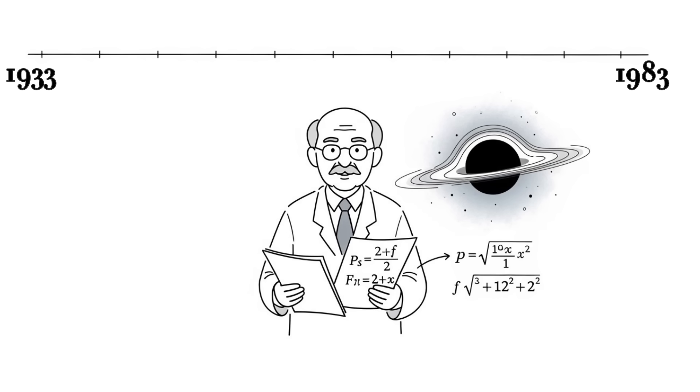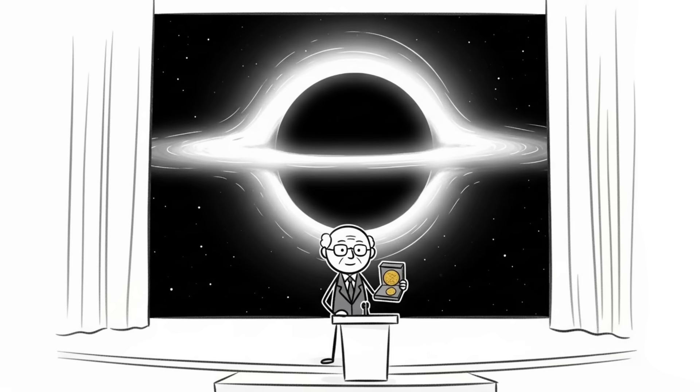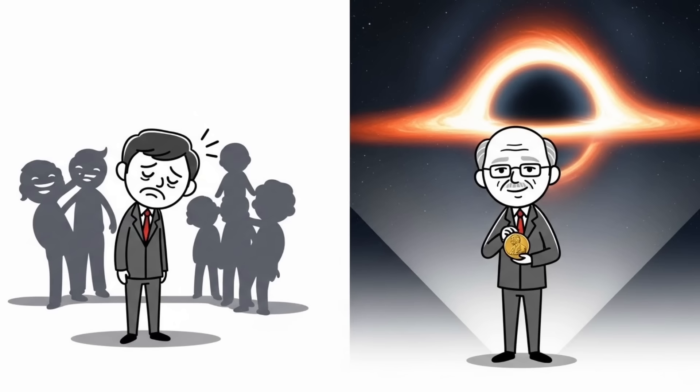It took 50 years for observations to prove he was right. In 1983, he finally won the Nobel Prize at age 73. Imagine being the teenager who figured out one of space's biggest mysteries only to have these so-called experts laugh at you for half a century.